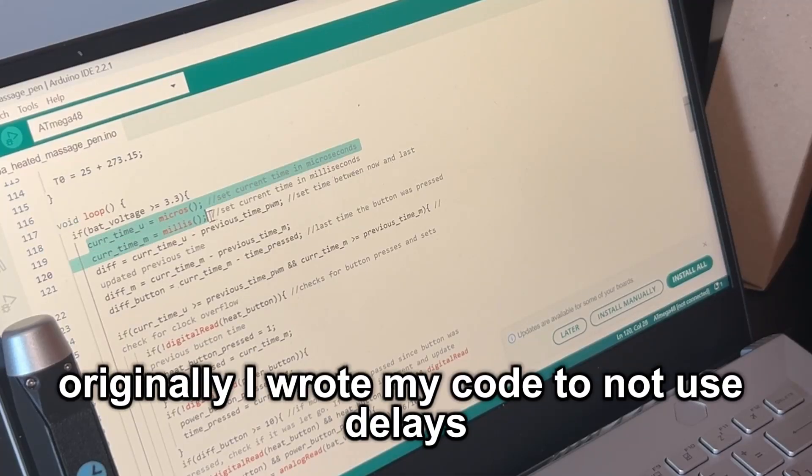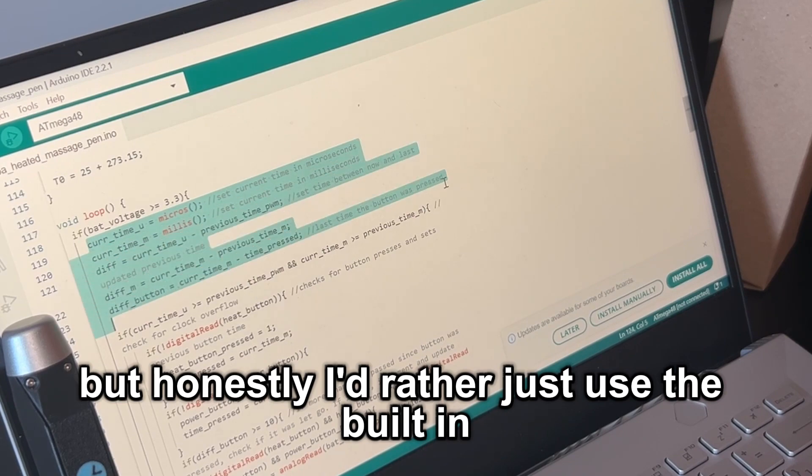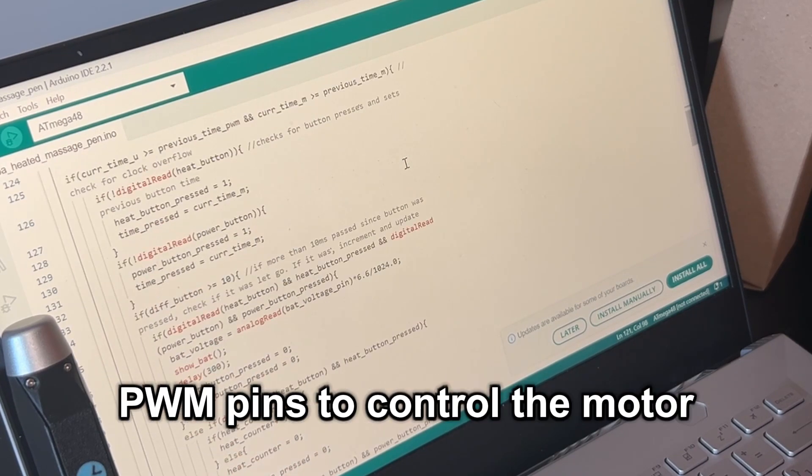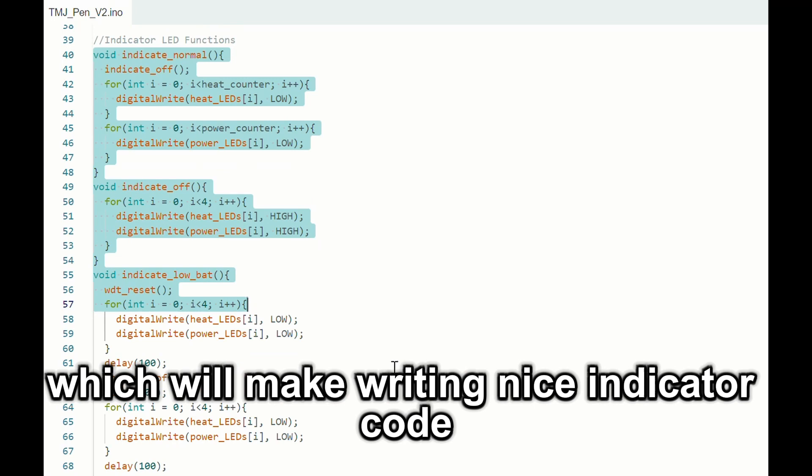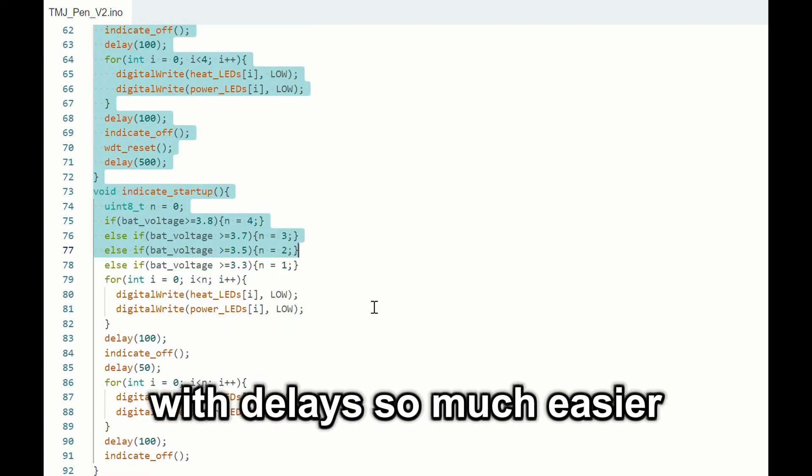Originally, I wrote my code to not use delays, but honestly, I'd rather just use the built-in PWM pins to control the motor. Which will make writing nice indicator code with delays so much easier. And for button presses, I'll just use interrupts.